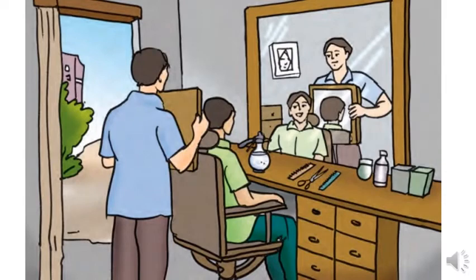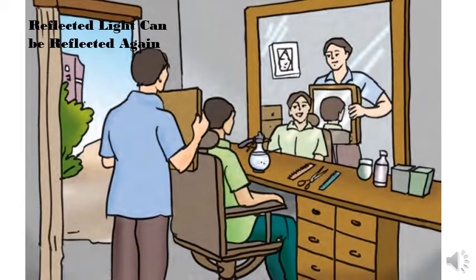Have you seen such kind of picture or have you experienced? In this case, the reflected light is getting reflected. When you go to parlors or saloons, what happens there? The person in the saloon shows you how is your haircut using a small mirror. You see your reflection in big mirror and it is getting reflected through small mirror and vice versa.